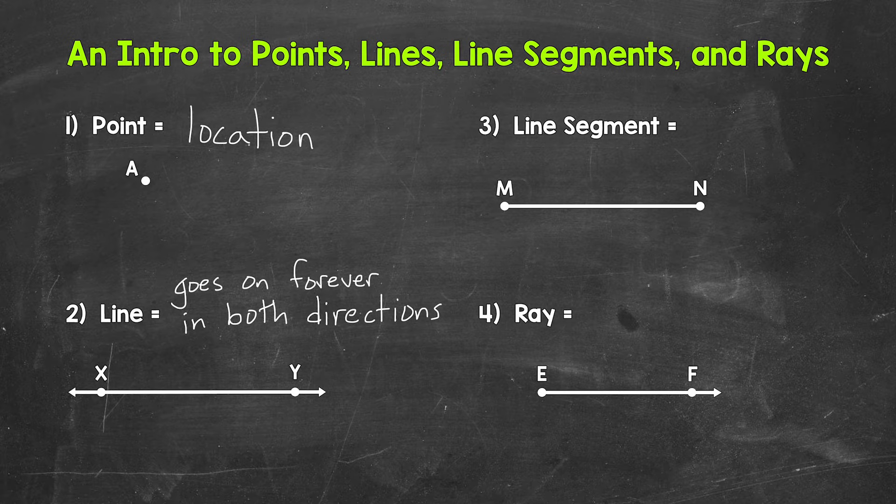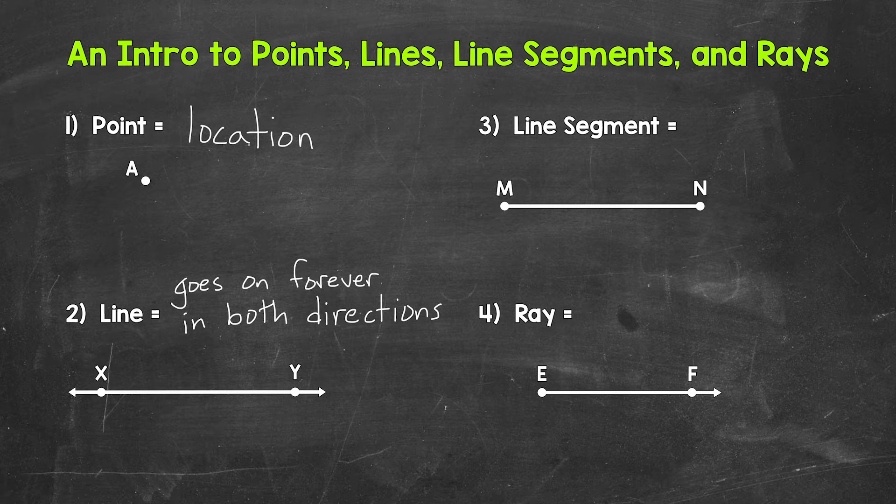But again, for that example, we have line XY, and those arrows show that the line goes on forever in both directions.